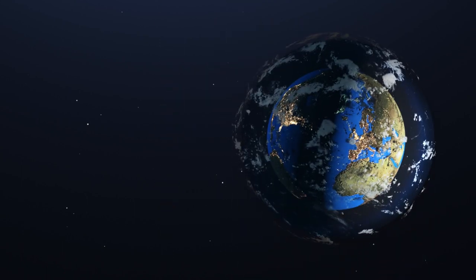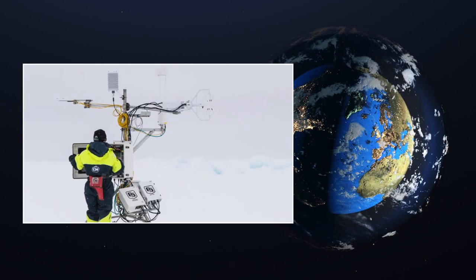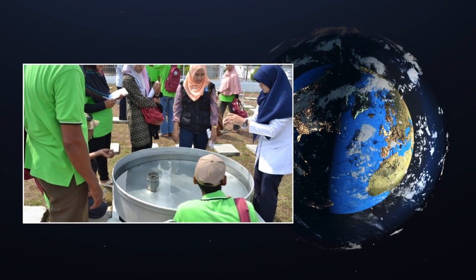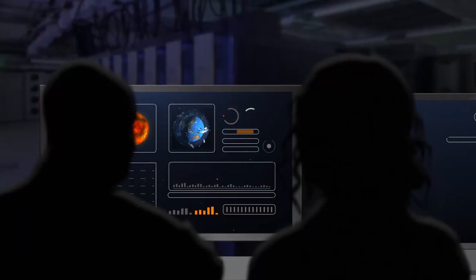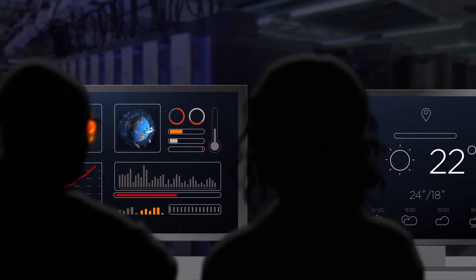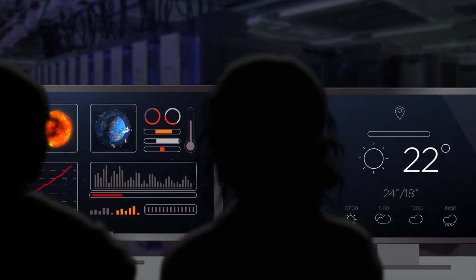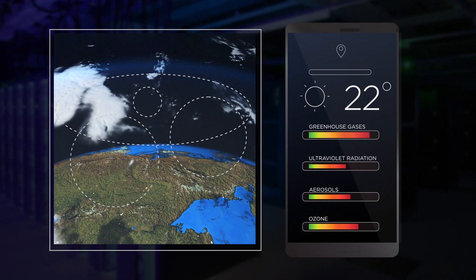Across the world, National Meteorological and Hydrological Services provide expertise and services both to harness the power of the sun and to protect us from it. Along with weather observations and forecasts around the clock, they monitor our atmosphere, keeping track of greenhouse gases, ultraviolet radiation, aerosols and ozone.